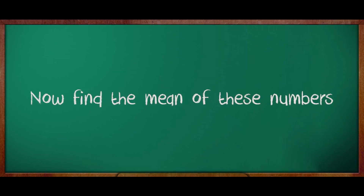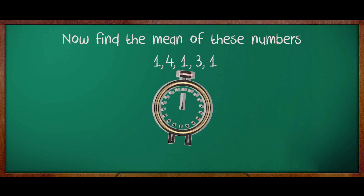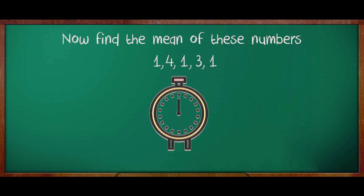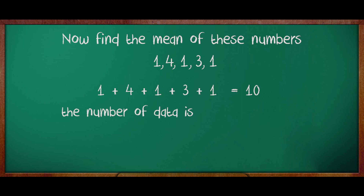Now, find the mean of these numbers. The numbers are 1, 4, 1, 3, 1. Did you finish? What is the sum that you got? 10. Now, what is the number of values in this set of data? 5. Divide the sum by 5. You get the answer 2, right? Yes. That means the mean for this set of data is 2.